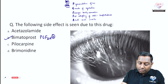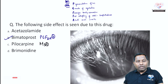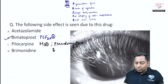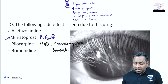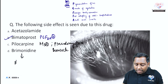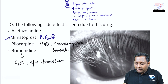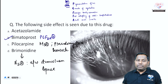Another important point: pilocarpine, an M3 agonist, can lead to a condition called pseudomyopia, and also brow ache — frontal headache — due to ciliary muscle spasm. Apraclonidine and brimonidine are alpha-2 agonists used in glaucoma; they are associated with side effects like drowsiness and can also cause apnea.